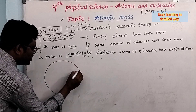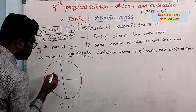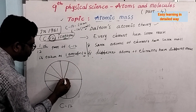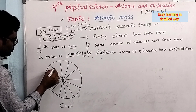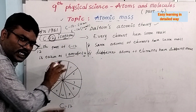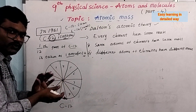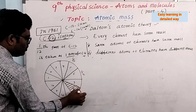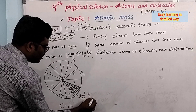If you take carbon-12, this is carbon-12. It can be divided into 12 equal parts: one, two, three, four, five, six, seven, eight, nine, ten, eleven, twelve. One, two, three, four, five, six, seven, eight, nine, ten, eleven, and twelve. This one part represents what? It is 1 by 12th of the C-12 mass.